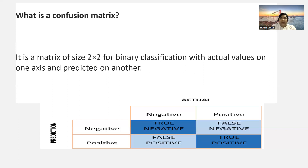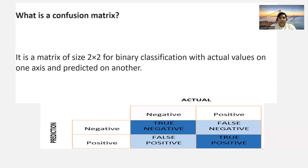Whatever classification model you use — random forest, SVM, any machine learning technique — in the end you have to check this. True positive means the model is also predicting positive and the actual data is also positive. If these two are correct, we can have some confidence in our model. When we give new entry data — age, eating habits, salary, and everything — it will calculate and tell you the right result, because if true negatives and true positives are higher, your model is working perfectly fine.